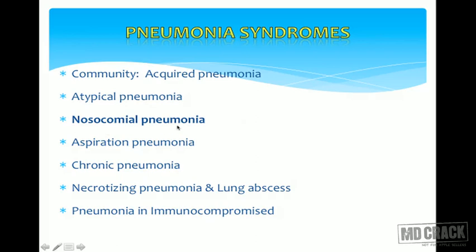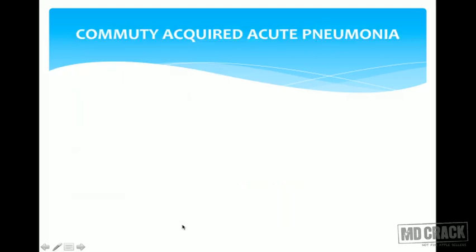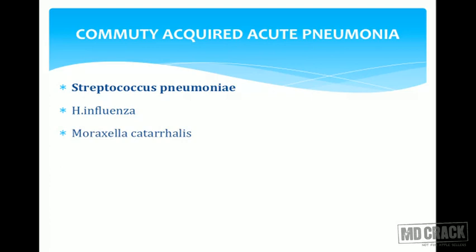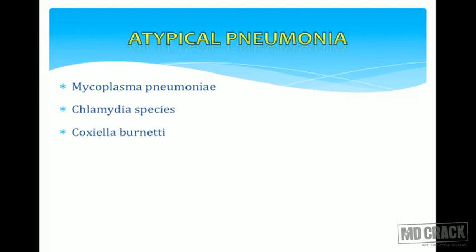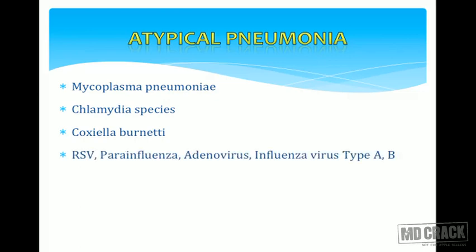Nosocomial pneumonias are very common, especially in ICU patients. Aspiration pneumonia is due to the aspiration of various things, especially in patients who are comatose. There are also chronic pneumonias, necrotizing pneumonias, lung abscess, and pneumonia in immunocompromised patients. Community-acquired pneumonias could be due to Streptococcal pneumoniae — the most common causative agent — H. influenzae, Moraxella catarrhalis, or Legionella pneumophila. Atypical pneumonias could be due to Mycoplasma pneumoniae, Chlamydia species, Coxiella burnetii, RSV, parainfluenza, or adenoviruses.